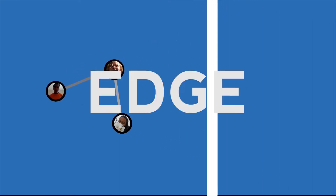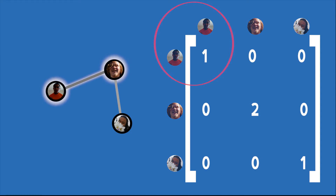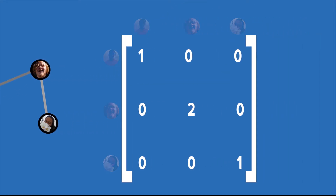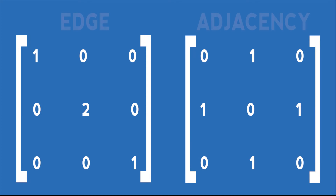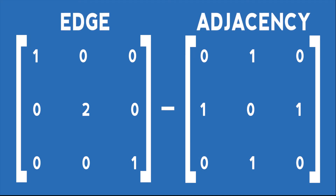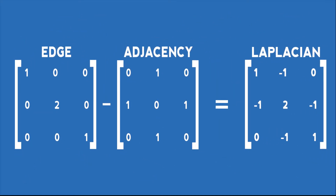We also have the edge matrix, and all it says is how many connections does a dot have. For instance, I have only one friend, so I'll put a one on my spot. If I combine these matrices with a calculator, I get the most important matrix of a graph: the Laplacian.